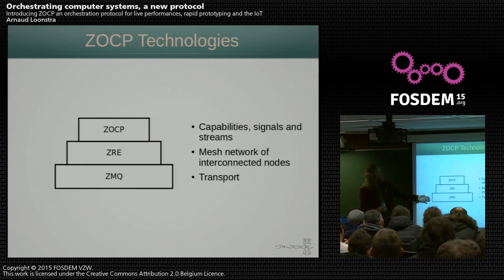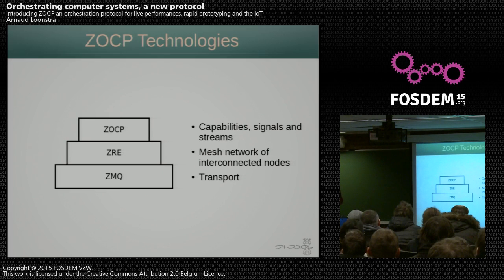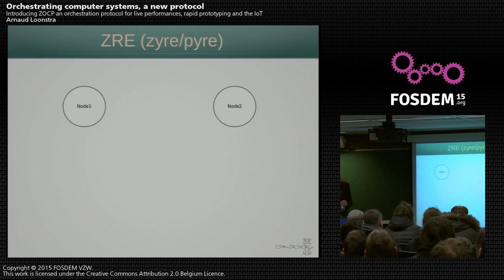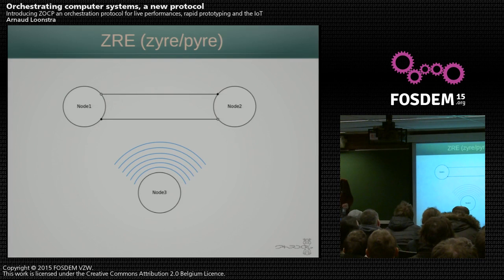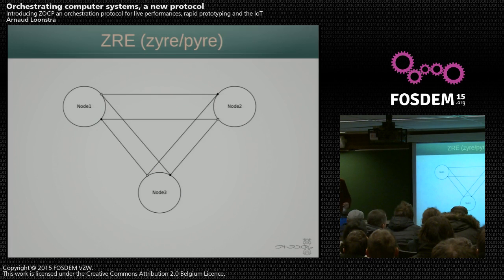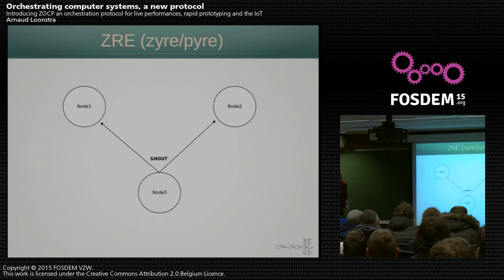ZOCP is built on top of 0MQ. On top of that we have the XIER framework with the ZRE protocol, and on top of that we have ZOCP. ZRE and XIER give us the interconnected nodes. Imagine two nodes — they broadcast, and that's how they discover each other and do a handshake. A third node comes in, broadcasts, does a handshake, and now they're all interconnected. We don't have to deal with this discovery ourselves anymore. From there, nodes can whisper from one to another, or shout — which is group messaging — and that's what we use in ZOCP.